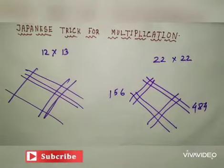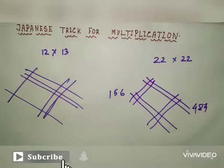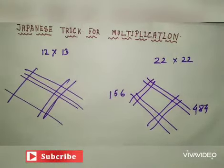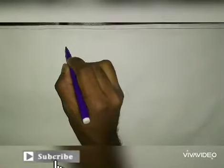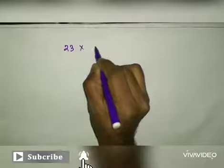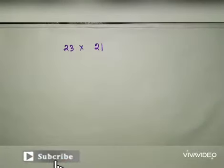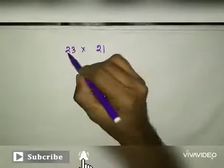Why is this? I will show you the same example. 23 x 21. This is 2, 1, 2, 2, 3.